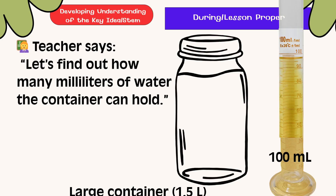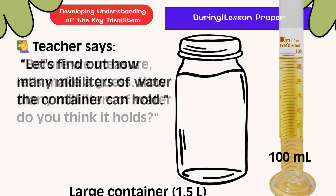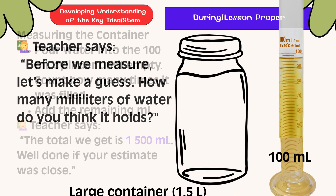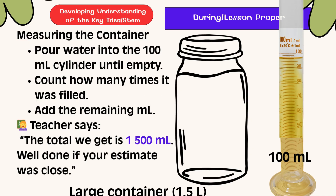Let's find out how many milliliters of water the container can hold. Before we measure, let's make a guess — how many milliliters do you think it holds? To measure: pour water into the 100 mL cylinder until empty, count how many times it was filled, then add the remaining mL. The total we get is 1,500 mL. Well done if your estimate was close!